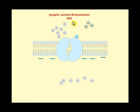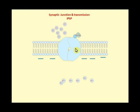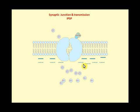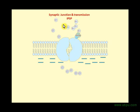The inhibitory post-synaptic potential (IPSP) works similarly but with the opposite effect. The ligand attaches to its receptors and the gates open. Instead of positive charge entering, the negative chloride ions come in, increasing the negativity. Alternatively, potassium ions go out, also creating greater negativity since positive ions are leaving.